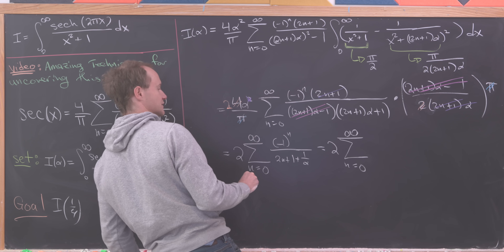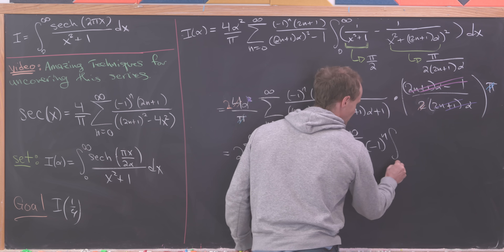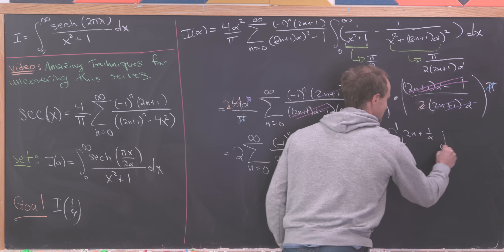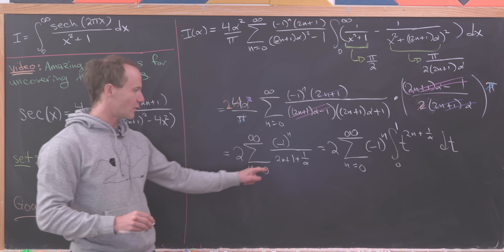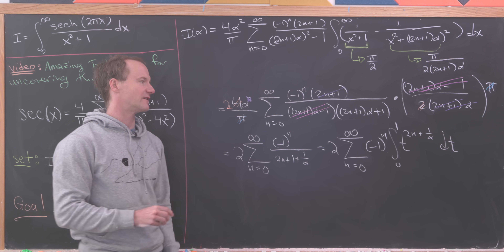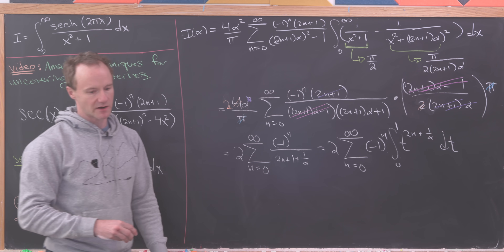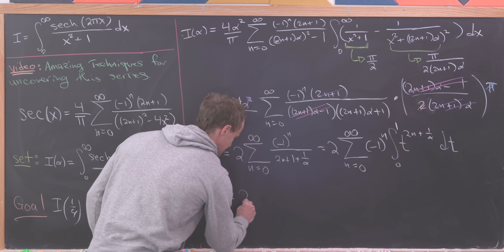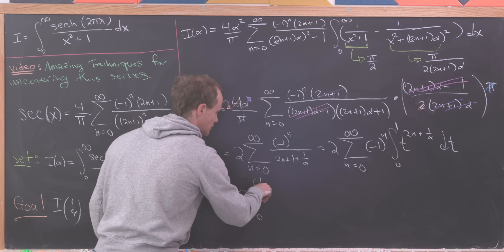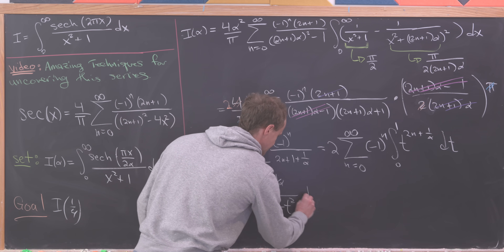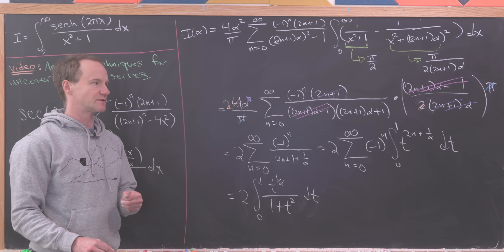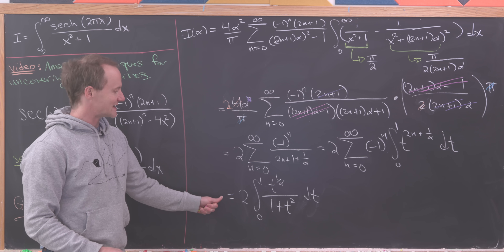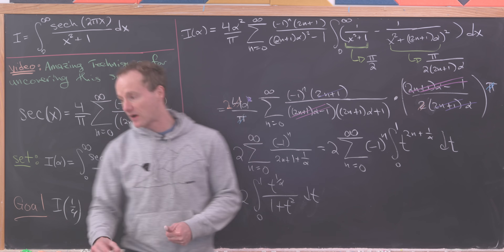Using a standard geometric series with common ratio −t² and starting term t^(1/α), the sum gives us 2 times the integral from 0 to 1 of t^(1/α) / (1 + t²) dt. That is our I(α). Now we evaluate at α = 1/4 and we're done.